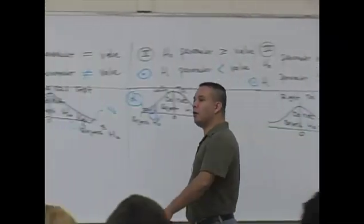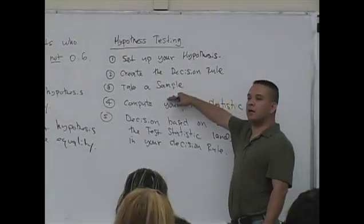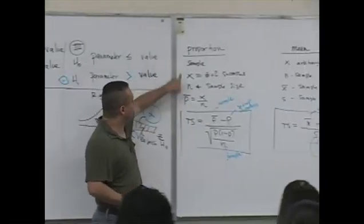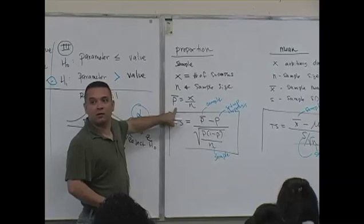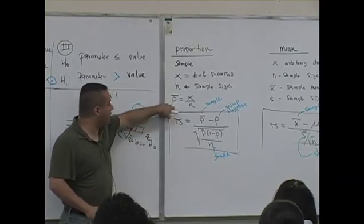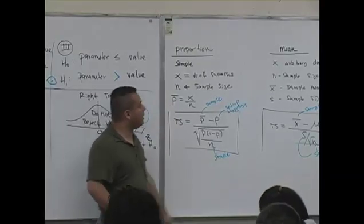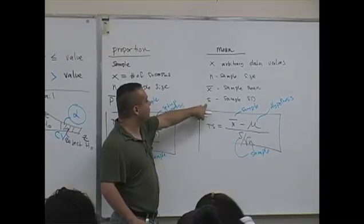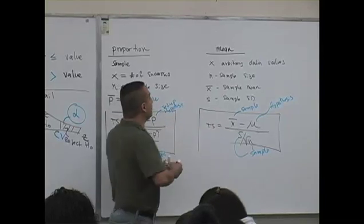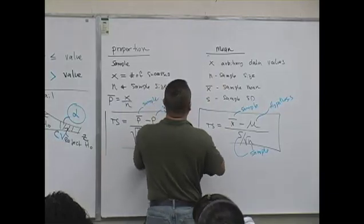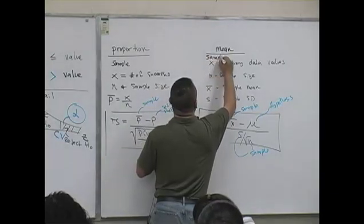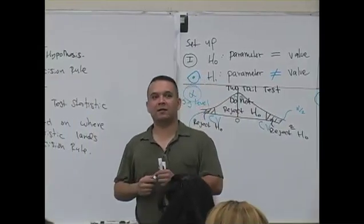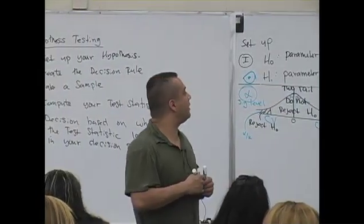This is both step three and four, meaning when you go take a sample you're gathering data, and then you're going to make some sense with that data. If data is about a proportion, you compute your sample proportion, this is the associated test statistic. If you gather arbitrary data values with a sample size, compute a sample mean and sample standard deviation, this is the associated test statistic. So this is from your sample. The first is for a proportion and the second is for a mean.